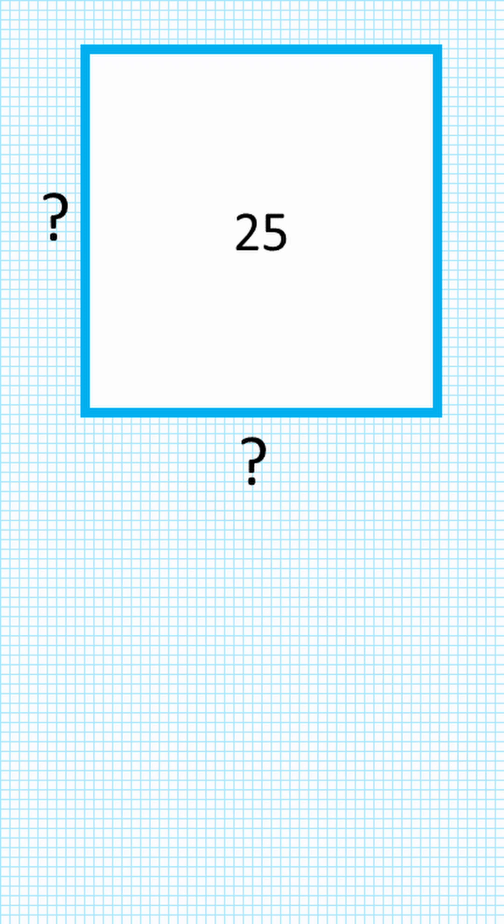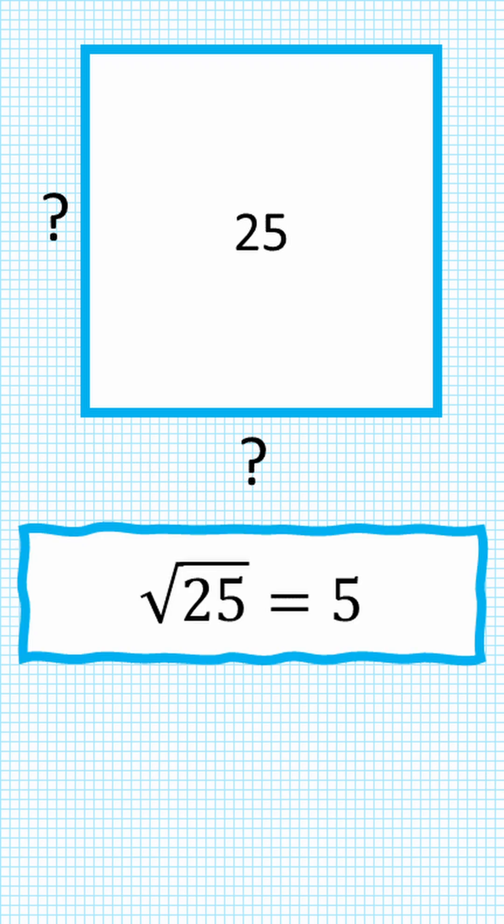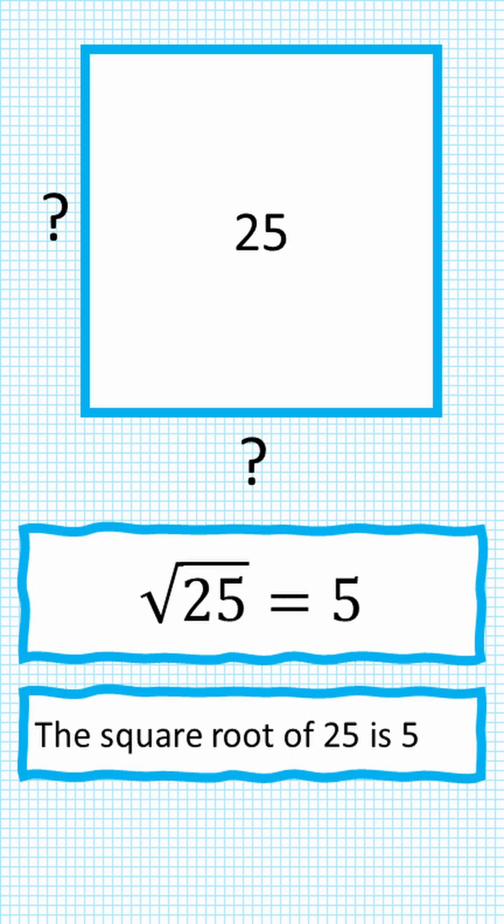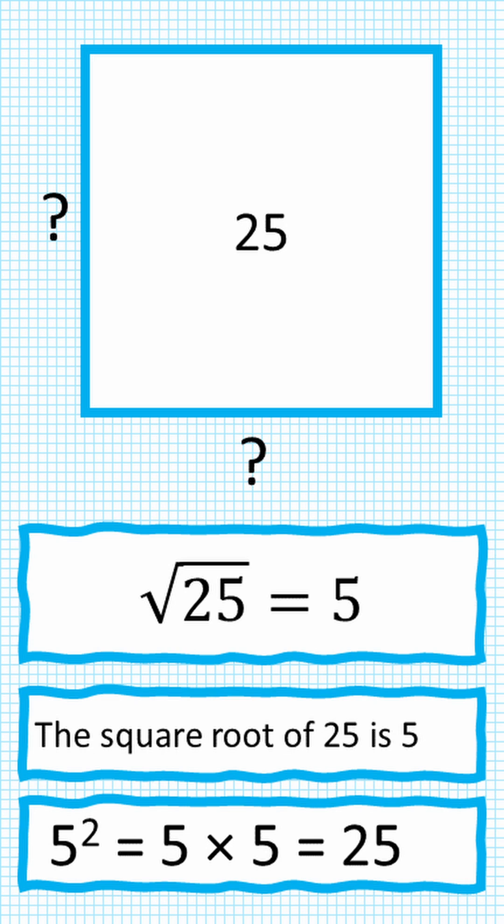So we'll use the square root button in our calculator, and the square root of 25 equals 5 because 5 to the power of 2, or 5 times 5, equals 25.